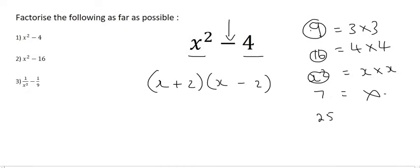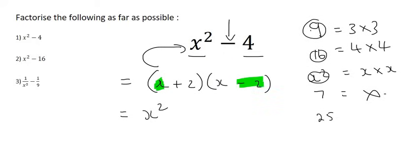And that's the answer. But if you want to double check to make sure that it actually works out, let's multiply the two brackets together and see if we get back to x squared minus 4. We can start by multiplying x and x, and that gives us x squared. We'll then multiply x and minus 2, and that gives us minus 2x.